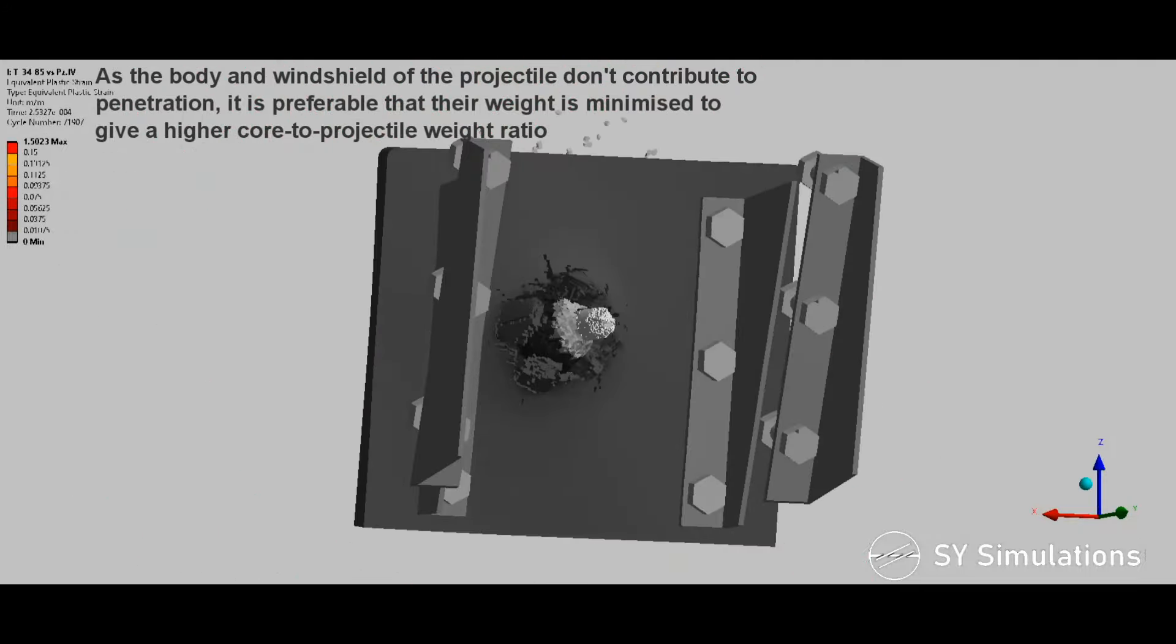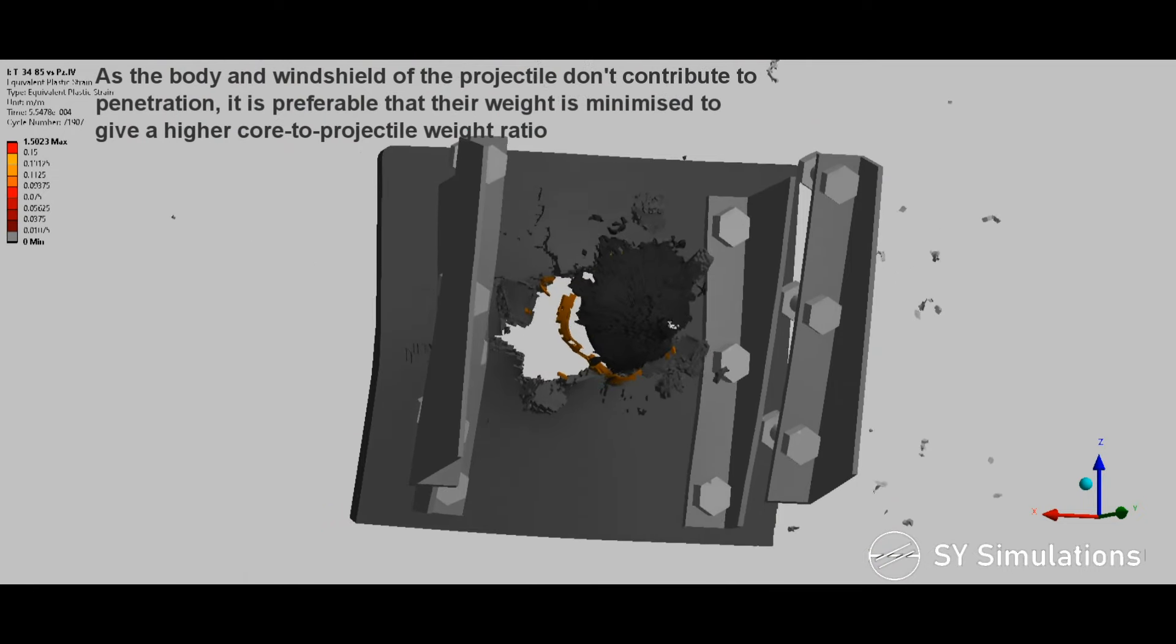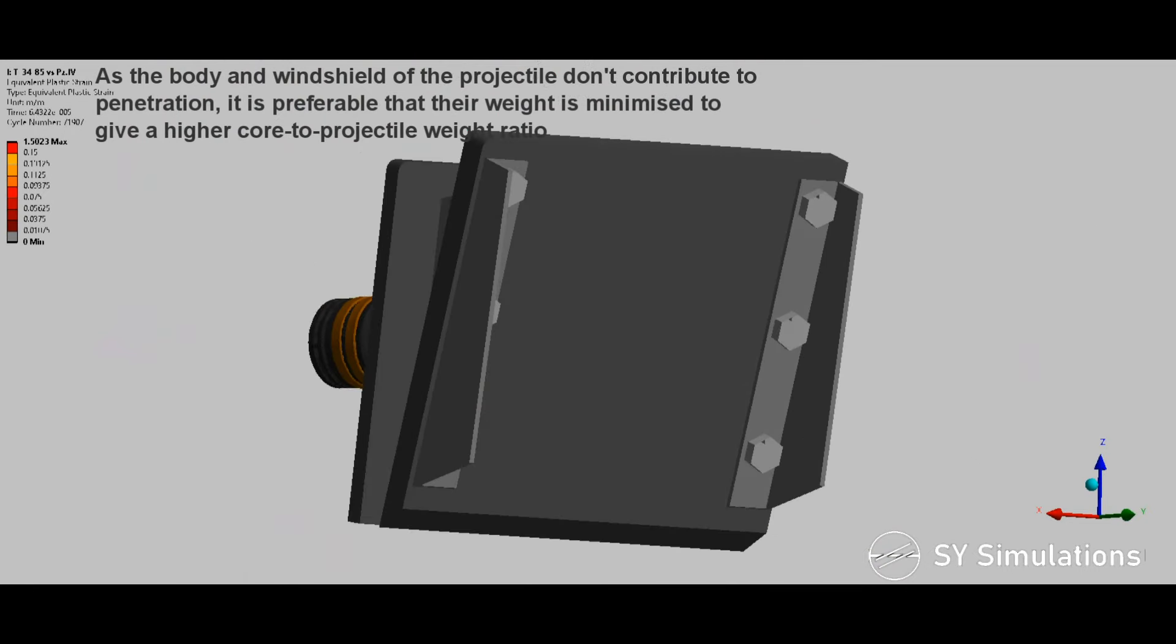As the body and windshield of the projectile don't contribute to penetration, it is preferable that their weight is minimized to give a higher core to projectile weight ratio.